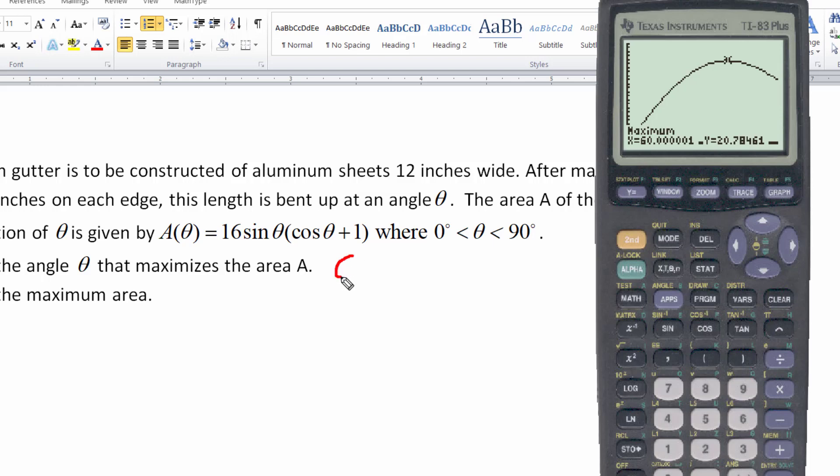So here it tells me maximum, x equals 60. Remember this is in degrees. So it's 60.0000 and so on. We can just call that 60 degrees. So the angle that'll maximize the area is 60 degrees.